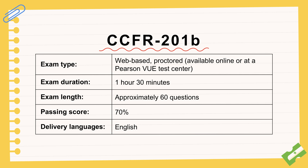The CCFR-201B exam is pretty standard — it's web-based and proctored, either online or at a Pearson VUE center. It's about 90 minutes long, maybe 60 questions. You need a 70% to pass, and it's in English. That context helps frame why understanding ATT&CK is so important. It's become the common language you need, not just for exams, but for actually defending systems.